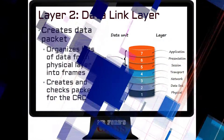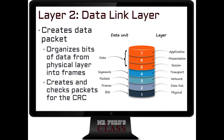Let's get going with our data link layer. The data link layer, layer 2, is going to create what we know as data packets. Basically, this is envelopes for our message. It's going to organize those bits of data — those zeros and ones — into what we call frames.